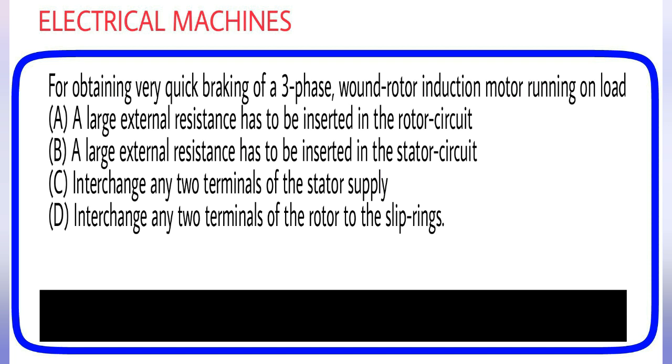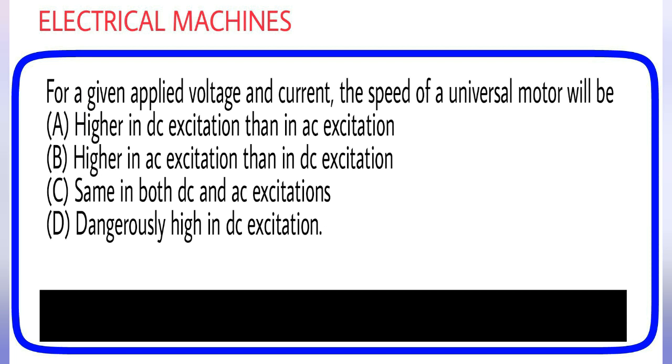For obtaining very quick braking of a three phase wound rotor induction motor running on load: (A) A large external resistance has to be inserted in the rotor circuit, (B) A large external resistance has to be inserted in the stator circuit, (C) Interchange any two terminals of the stator supply, (D) Interchange any two terminals of the rotor to the slip rings. Answer is option C. For a given applied voltage and current, the speed of a universal motor will be: (A) Higher in DC excitation than in AC excitation, (B) Higher in AC excitation than in DC excitation, (C) Same in both DC and AC excitation, (D) Dangerously high in DC excitation. Answer is option A.